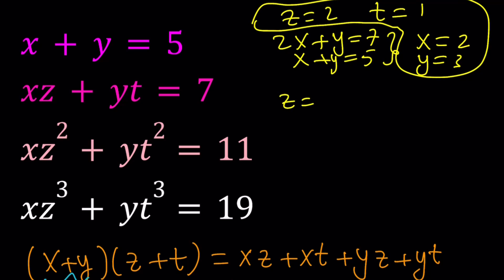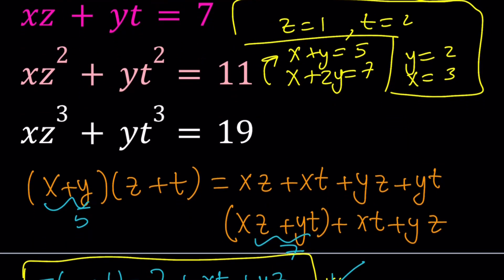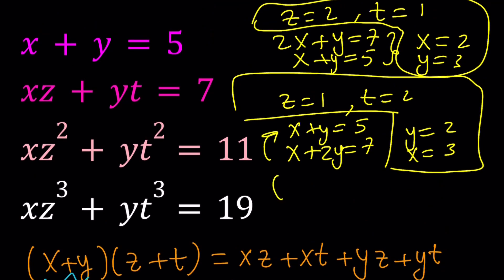What happens if z is 1 and t is 2? As you know, they're interchangeable. And in that case, we're going to get x plus y equals 5 again. But this time xz is going to be x, but yt is just going to be 2y. And then when you subtract, you're going to get y is equal to 2 and x is equal to 3. Again, if z and t interchange, x and y also interchange the same way. So we end up with two ordered pairs that can be written as, I mean, order quadruples. 2, 3, 2, 1, or 3, 2, 1, 2. Those are going to be the solutions.